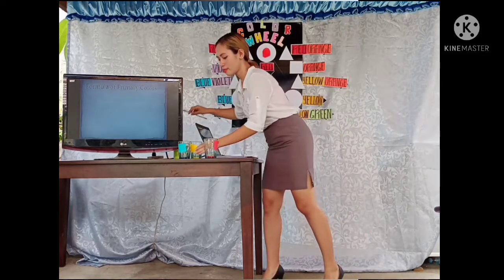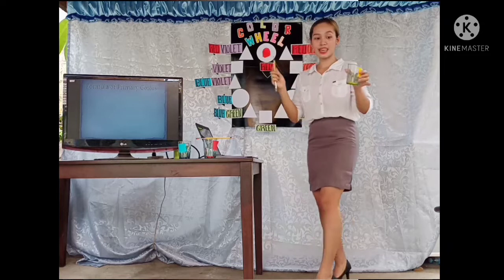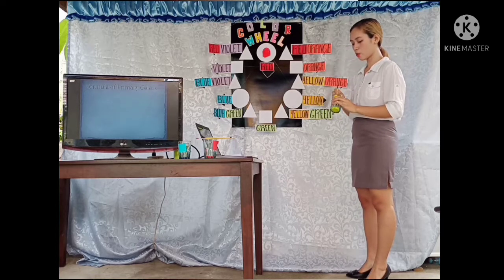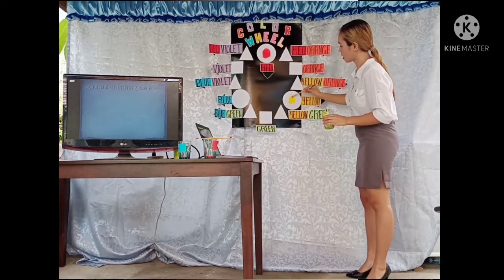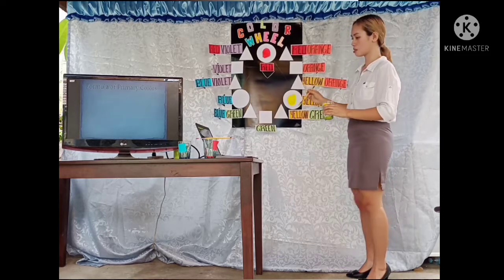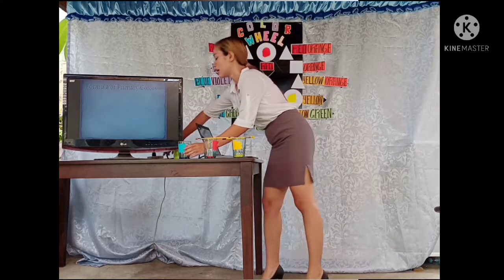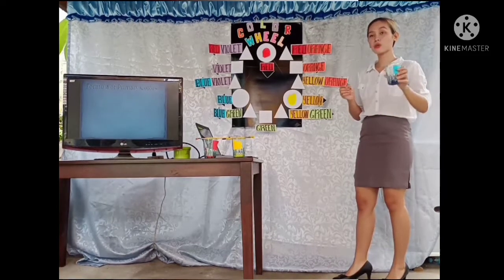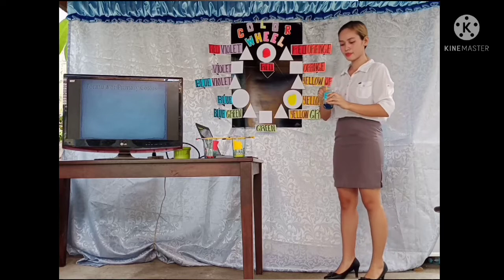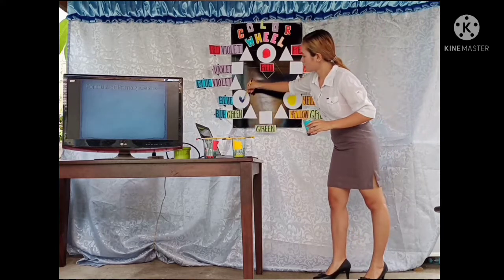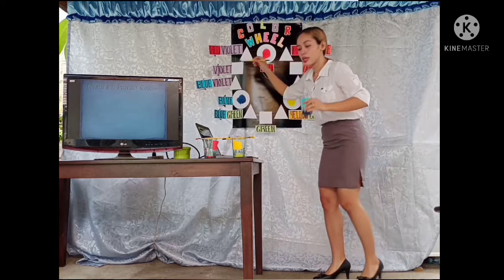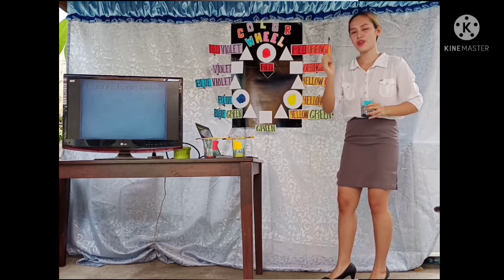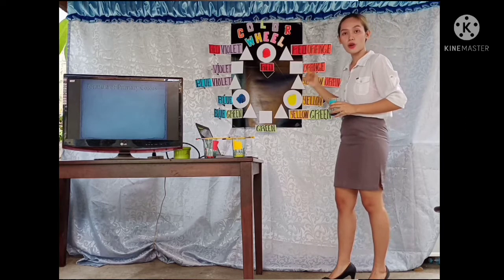And then next is the yellow one. So, where is the yellow, class? The yellow is here. So we will put this one here. Again, what is the last color of the primary colors, class? Very good. Blue. So now we will put the blue here. Now, class, are all those primary colors already in the chart? Yes, very good. Red, blue, and yellow are already here.